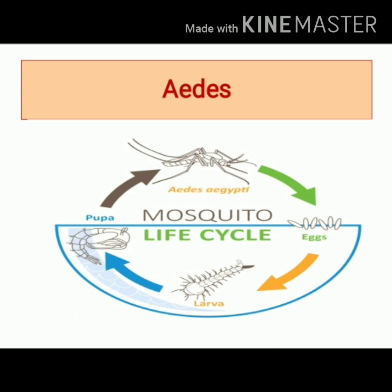Since the Aedes Mosquito belongs to the tribe Culicini, lateral floats are absent. The larva of the Aedes Mosquito is suspended in water with the head downwards. The larva possesses a siphon tube which is located on the 8th abdominal segment. The larval stage remains for 5 to 7 days.